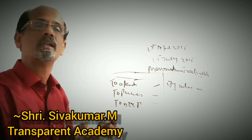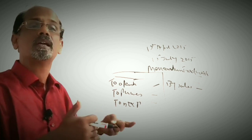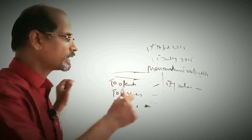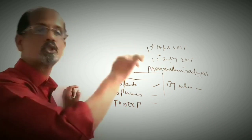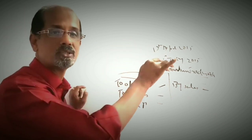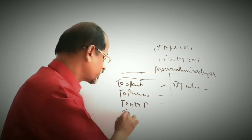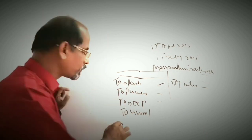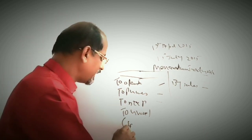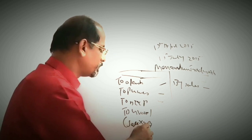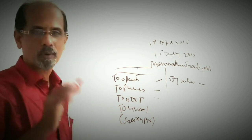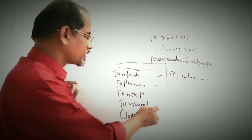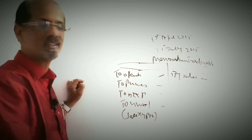How will you find out the gross profit? In the problem, sometimes the gross profit ratio may be given. In that case, you have to find the gross profit as a percentage on sales — that is, gross profit equals sales multiplied by GP ratio. The GP ratio will be given in the problem.